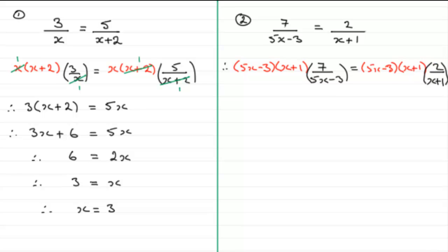So, what happens is that we can cancel out common factors now. The 5x minus 3 can cancel out with 5x minus 3 there. And x plus 1 here can cancel out with the x plus 1 there. So, what we have, therefore, got is 7 multiplied by x plus 1. And this equals 2 multiplied by 5x minus 3.